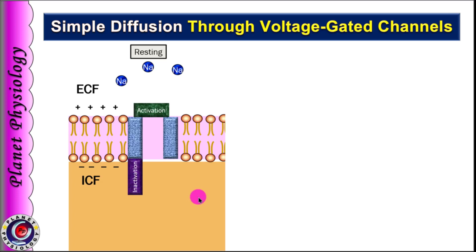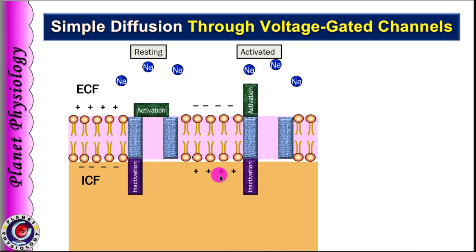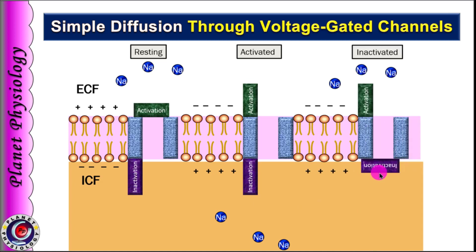In the animation, at rest the cell has negative charge inside and positive charge outside. At this resting potential, voltage gated sodium channels are in the resting state. In response to a change in membrane potential towards the positive side, the channel is activated — the activation gate opens and sodium influx begins, moving membrane potential further positive. The same change that opened the activation gate also causes slow closure of the inactivation gate, stopping sodium influx — the channel is then inactivated. Sodium diffusion through voltage gated sodium channels only occurs during the activated state, which lasts only a fraction of a second.